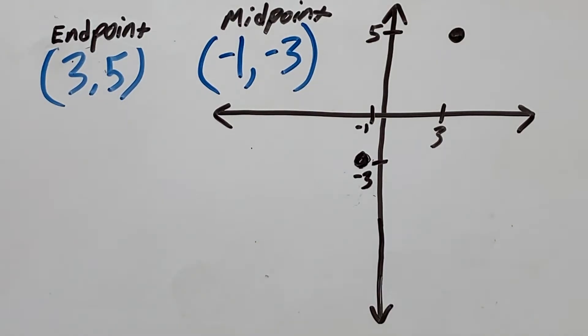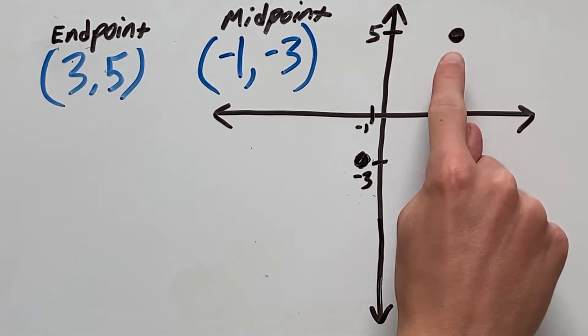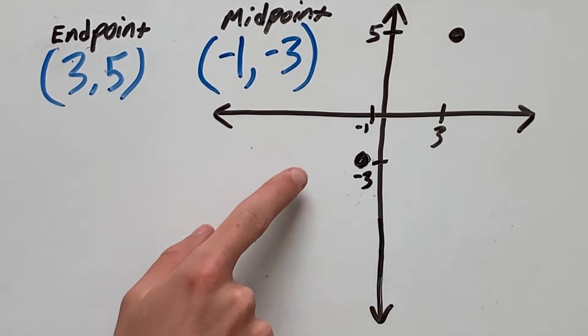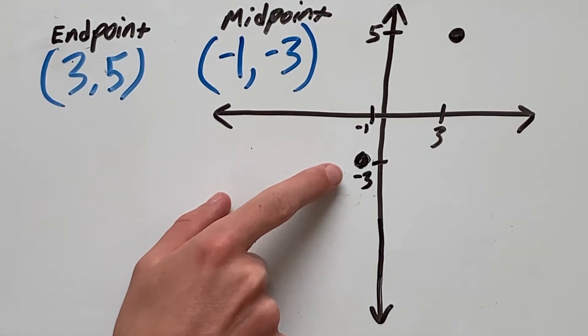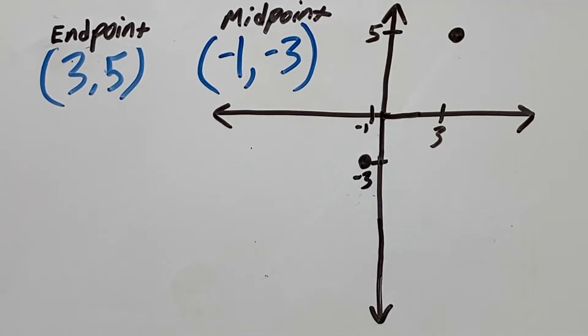So in this example, we have an endpoint of 3, 5 and a midpoint of negative 1, negative 3. Which means we have to find our endpoint which will be somewhere around here.